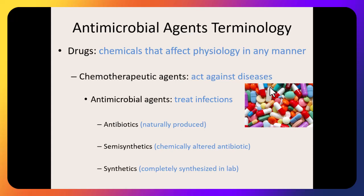Among drugs that treat and kill microbes in the body, we group them into antibiotics. While we generally say antibiotics kill bacteria, the word antibiotic is actually generic — it means anything against something living. Antibiotics are naturally produced, meaning something found in nature that can kill another type of organism. Penicillin came from the fungus Penicillium, which naturally inhibits bacterial growth.